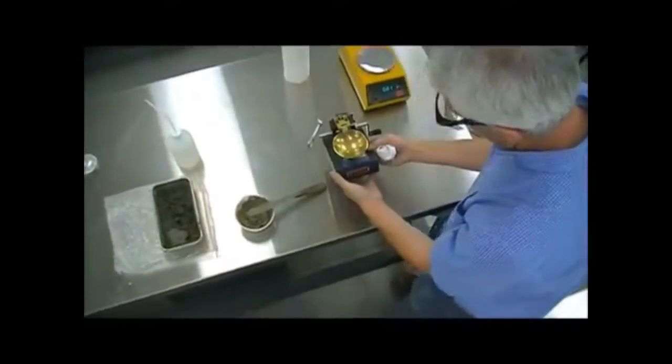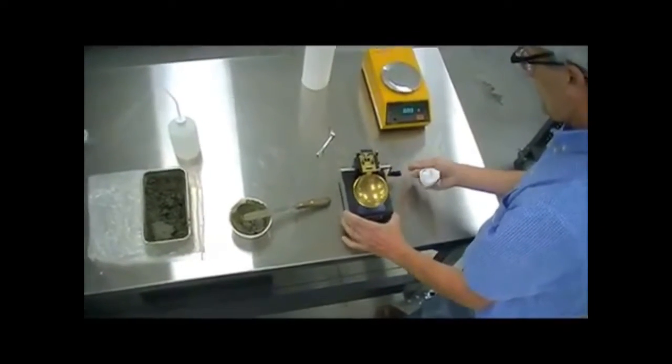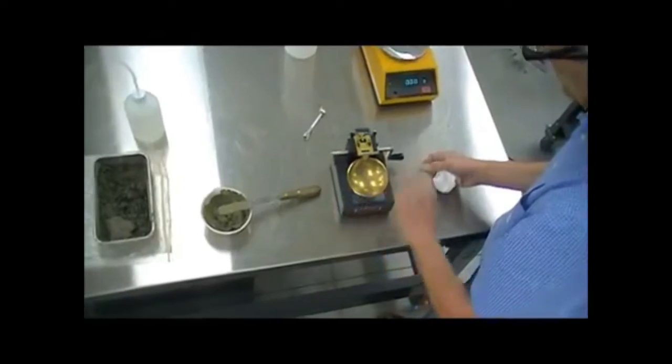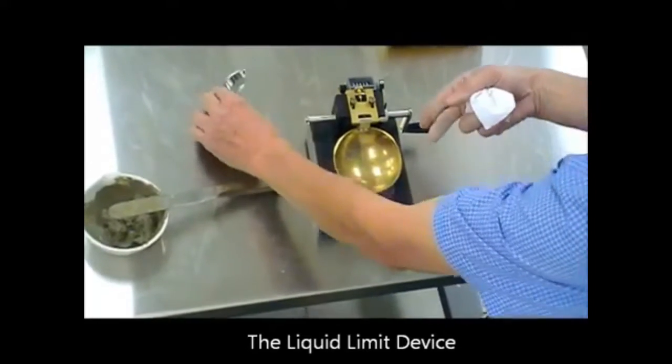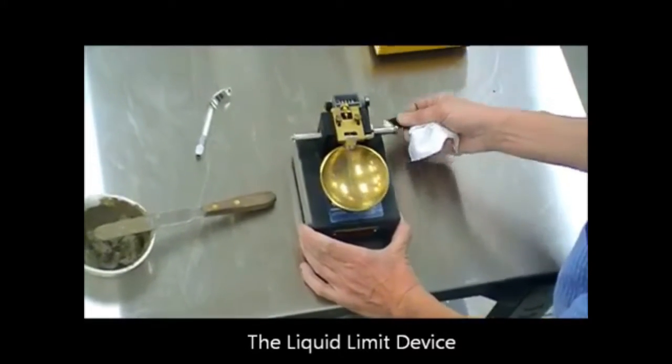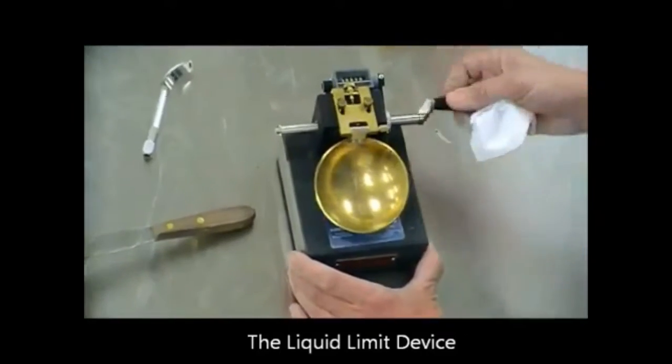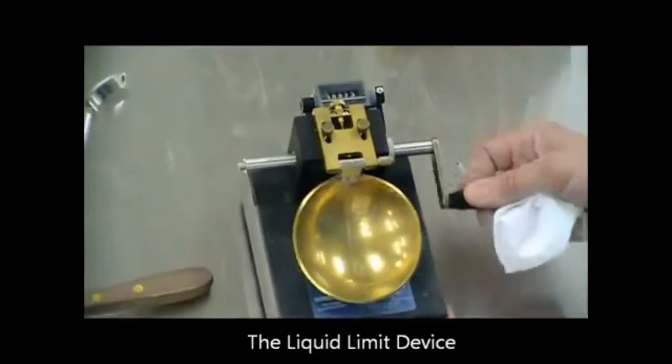Characteristics of the equipment. It's basically a brass cap where we're going to place the material here. Then we're going to cut a groove and then we're going to drop this at a rate of two revolutions per second. And we're going to count the number of revolutions that it takes for that gap to close.